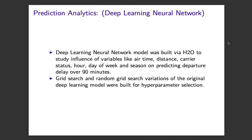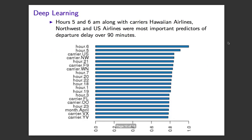A deep learning neural network model was built via H2O to study the influence of variables like airtime, distance, carrier status, hour, day of week, and season on predicting delay over 90 minutes. Grid search and random grid search variations of the original deep learning model were also built for hyperparameter selection. As the variable importance plot shows, early morning hours along with carriers Hawaiian Airlines, Northwest, and U.S. Airlines were the most important predictors of delay over 90 minutes.